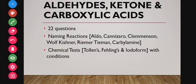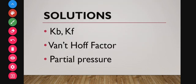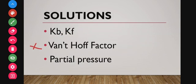Also, if you find time, learn naming reactions in amines — reactions of organic nitrogen compounds such as the Rosenmund reaction. For solutions, you have to know Kb (boiling point elevation constant), Kf (freezing point depression constant), how to calculate them, the van't Hoff factor, partial pressure problems, and depression of freezing point and elevation of boiling point. The van't Hoff factor is really very important.